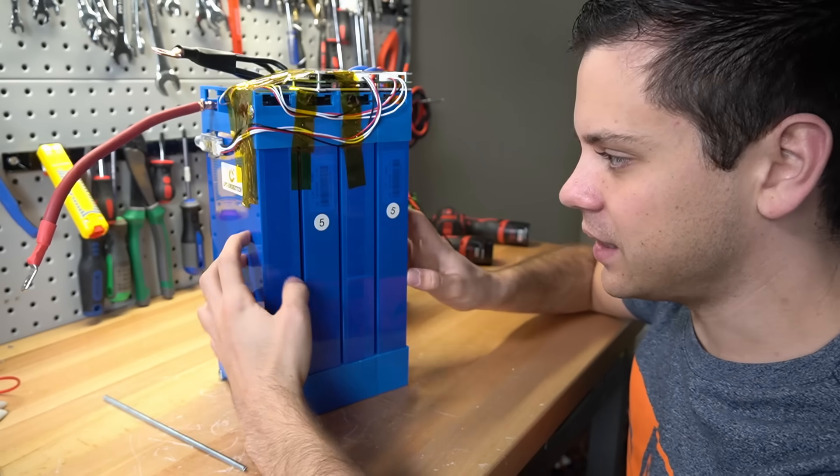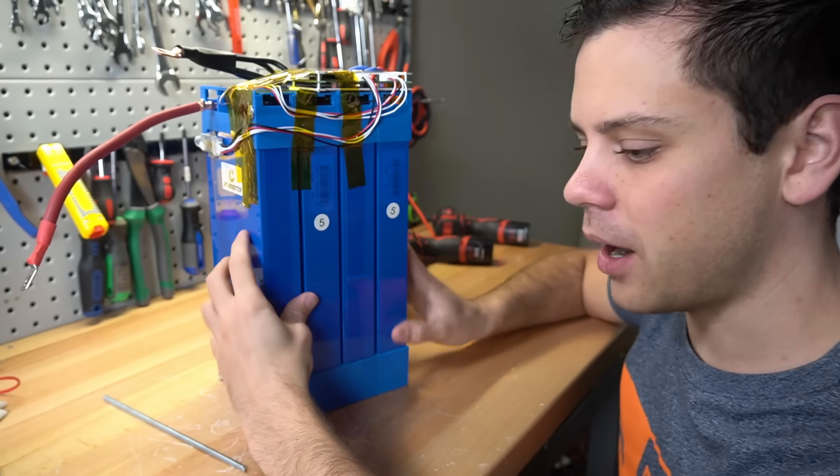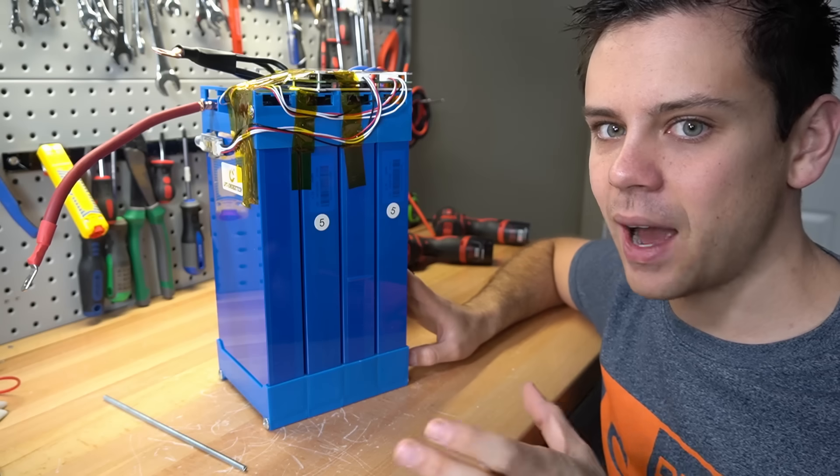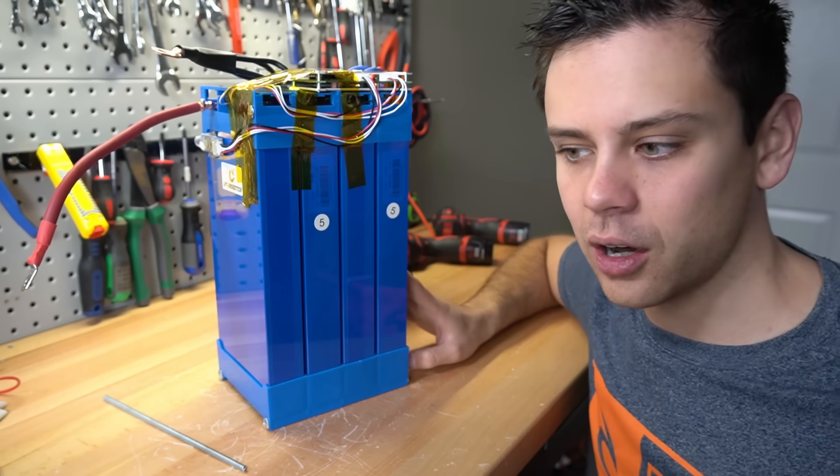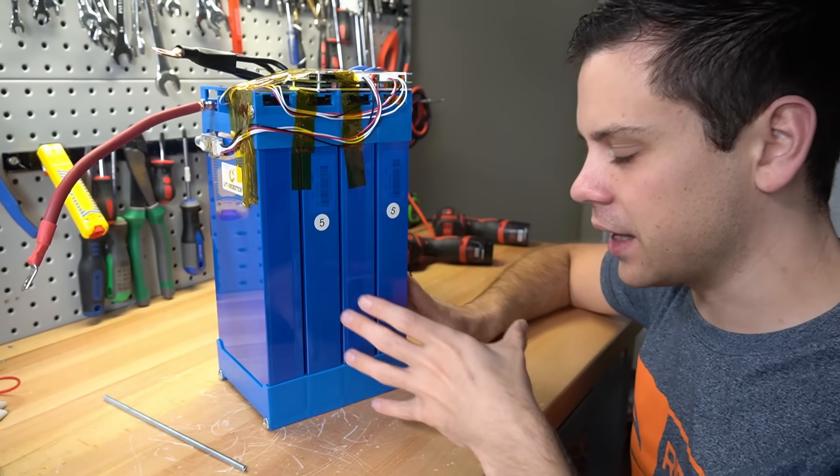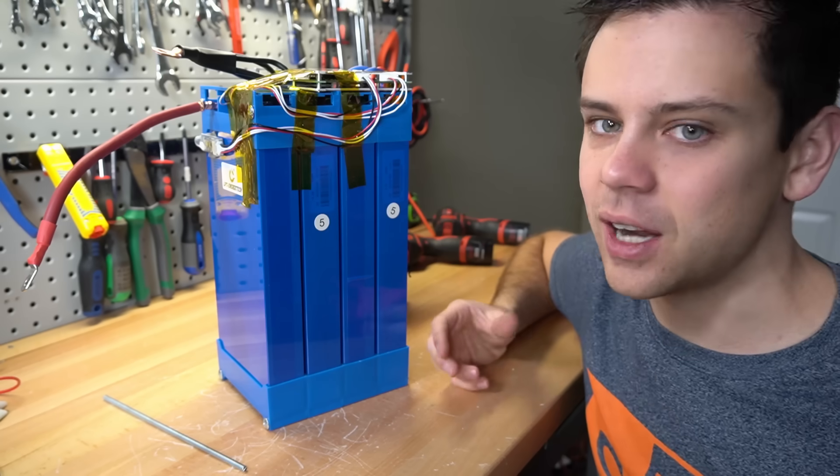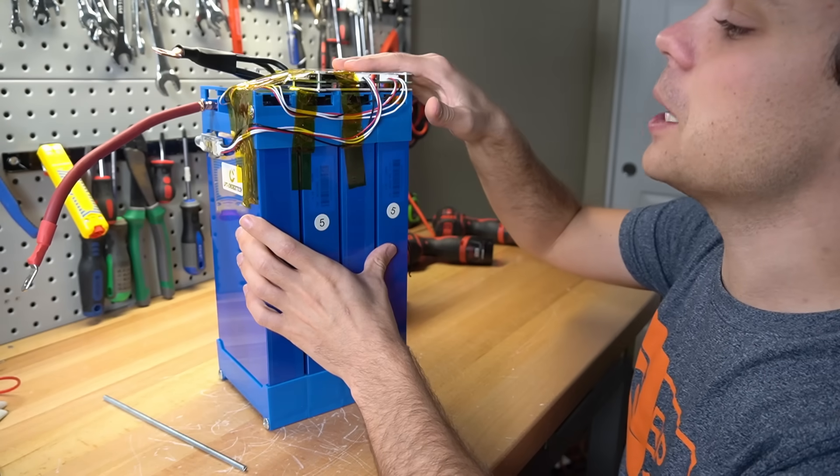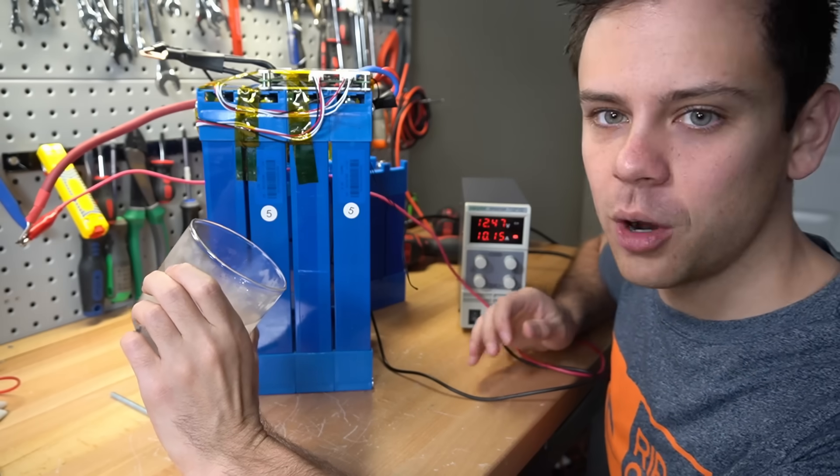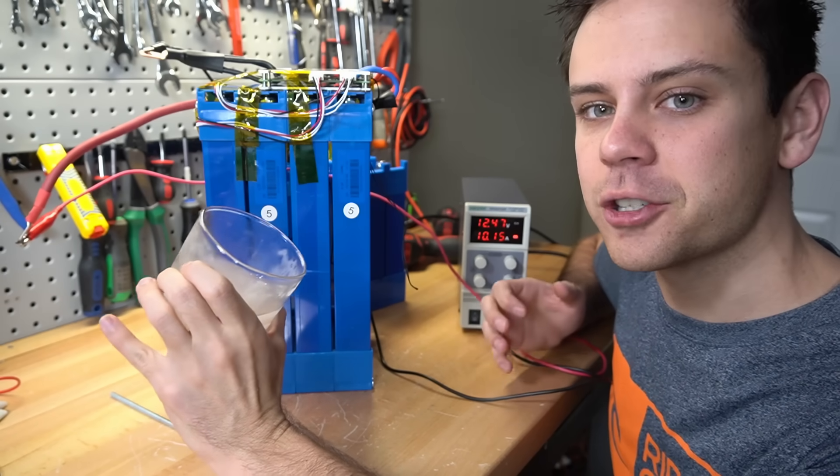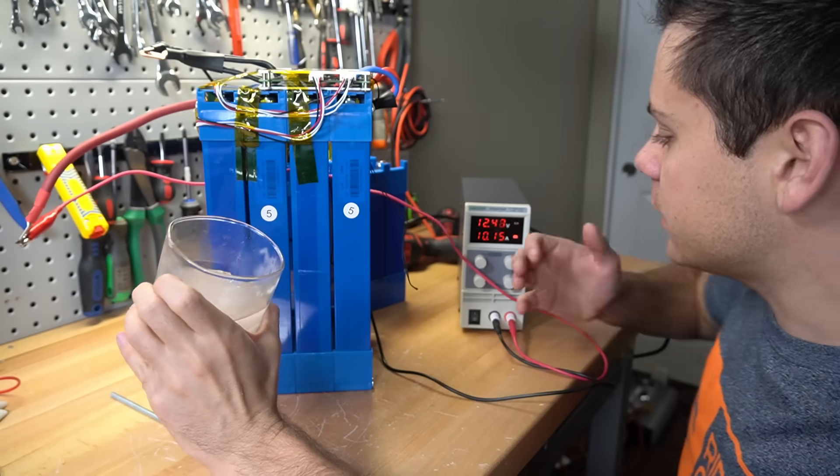And for a stationary setup with 16 of these 100 amp hour batteries you could have a serious backup system. And if you have like a Sol-Ark grid tie inverter with these that would be the best combination ever. You just have to add some kind of a BMS and you'd be done.